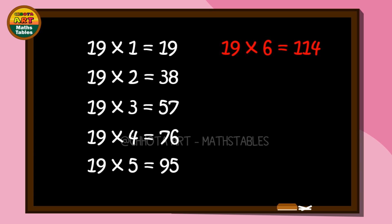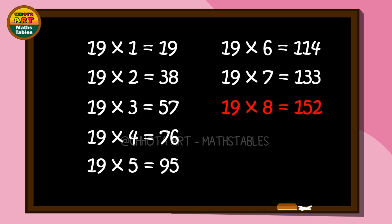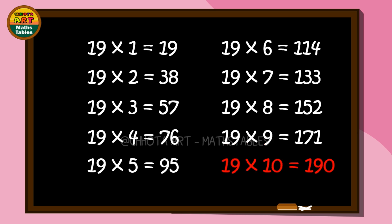19 sixes are 114. 19 sevens are 133. 19 eights are 152. 19 nines are 171. 19 tens are 190.